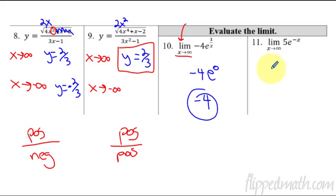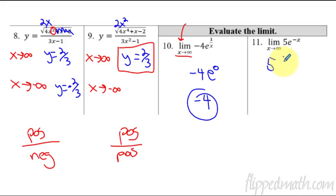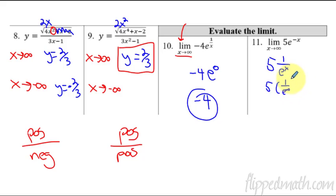For this next one, we have 5e to a negative exponent, which becomes 1 over e to the x. So that's 5 times 1 over e to the infinity, and 1 over a super big number is basically 0. So the answer is just 0.